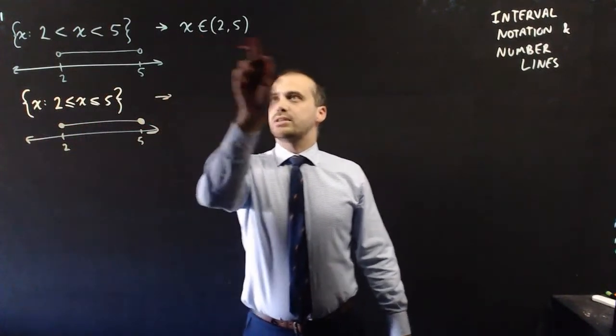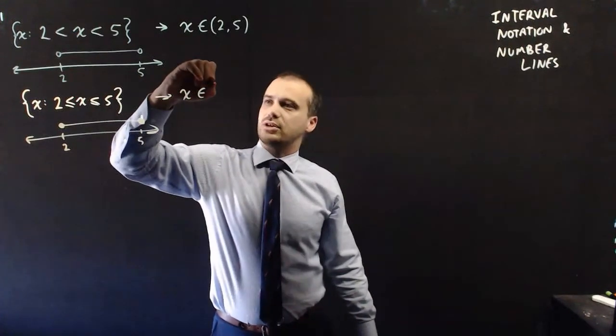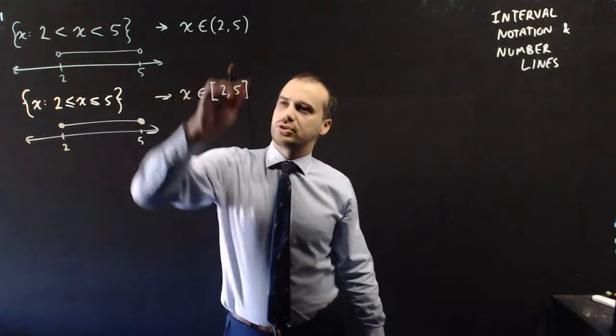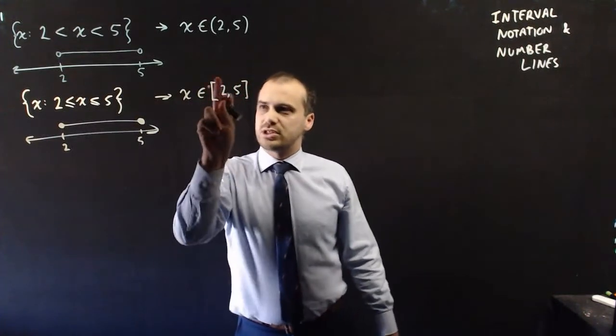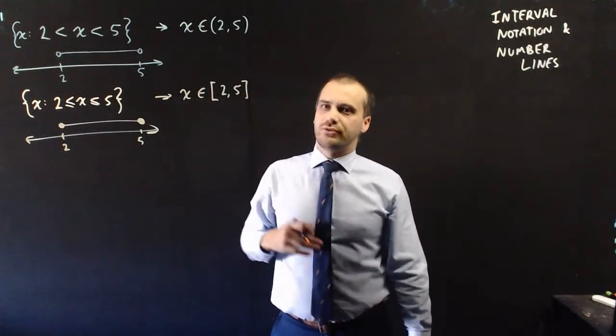But what about this notation here? Well, we say that x is in the set of 2 to 5. And this time, this square bracket means include the 2 and include the 5.